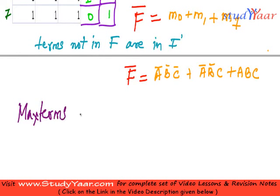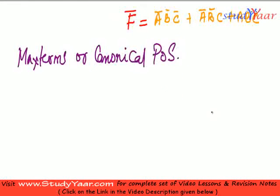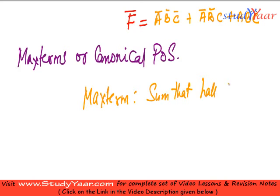Max terms are canonical POS. Product of sums. What is a max term? A max term is simply a sum that has all the variables present in the expression.